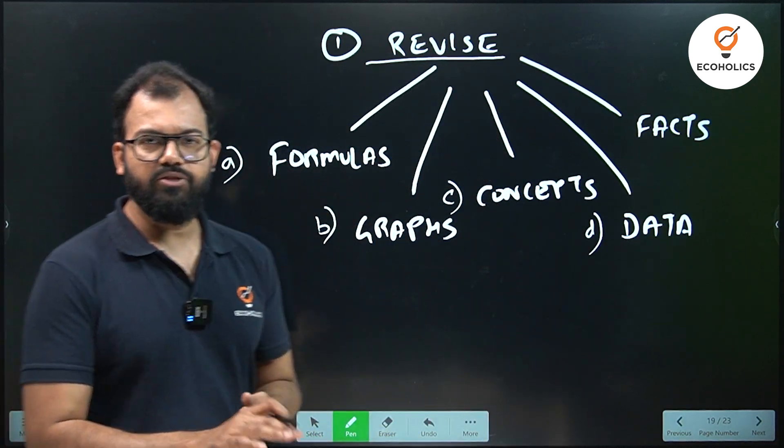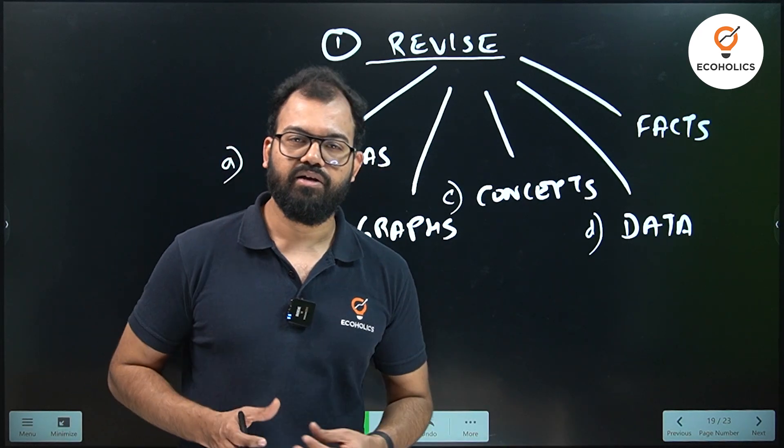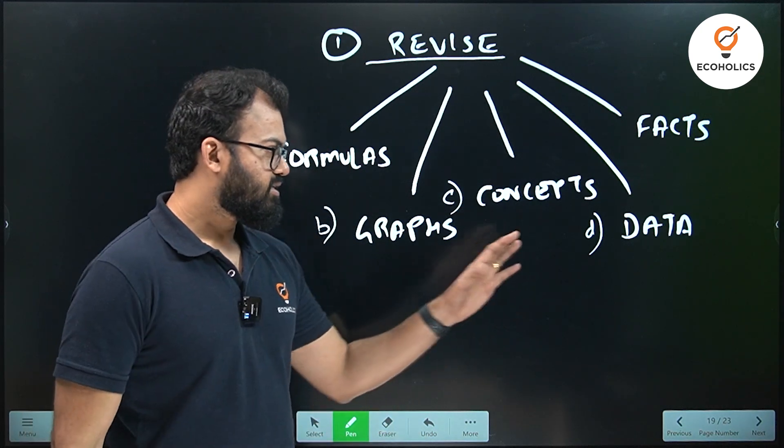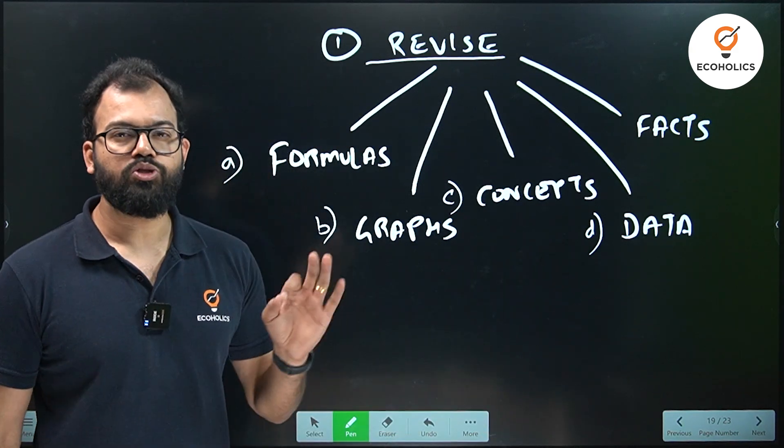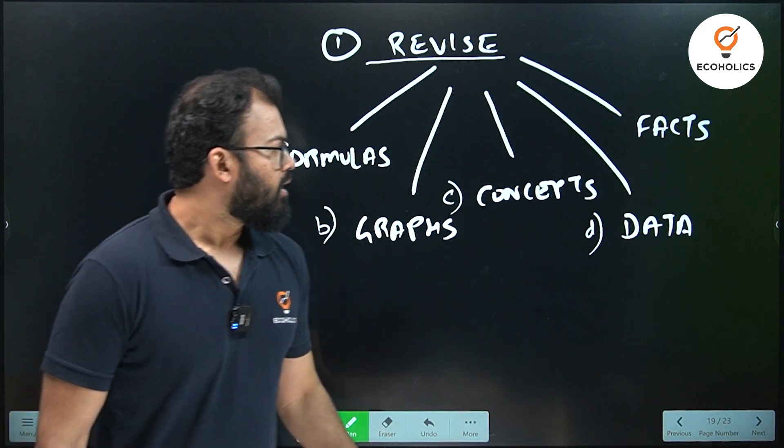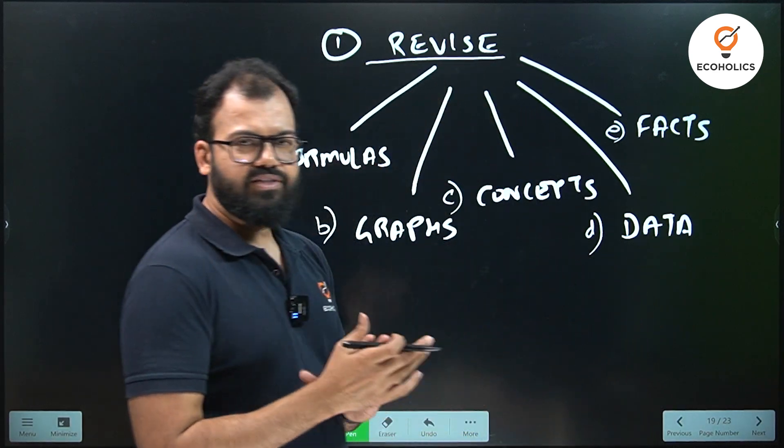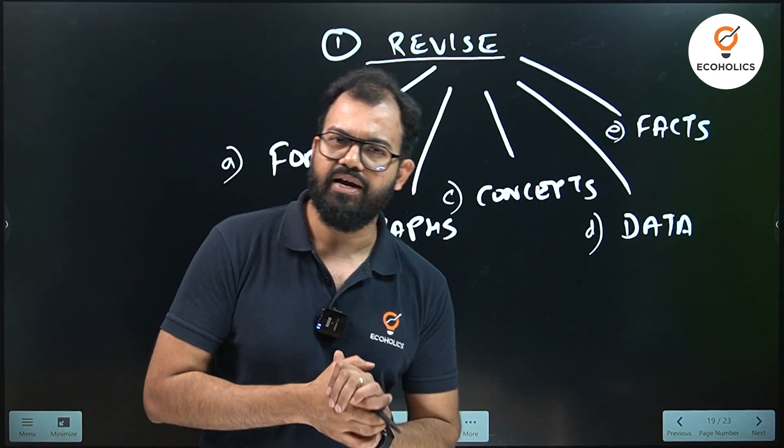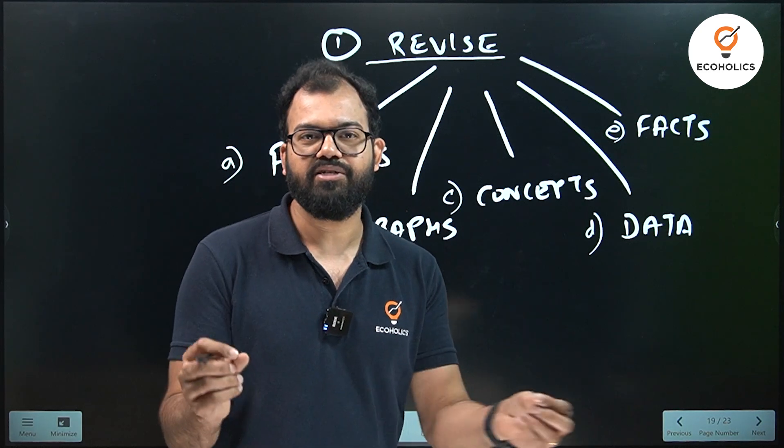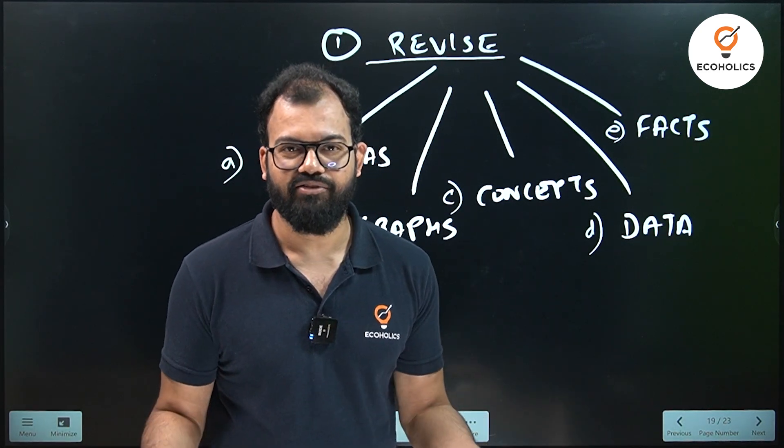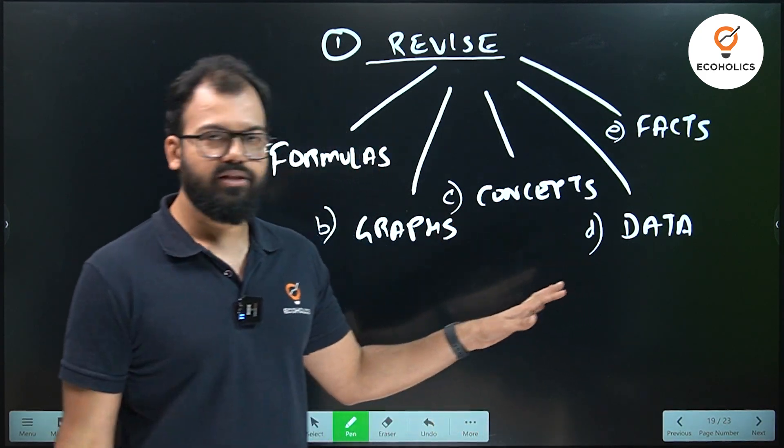Generally in UGC NET, we have seen questions directly asking the data - this much inflation, this is the debt to GDP ratio. So they ask data. I would recommend you to refer to economic survey for this - this is where you'll get the most authentic data. For our students, we compile and give them 50 odd data which are very vital like fiscal deficit, inflation, repo rate, CRR. If you understand approximations, you're able to answer these questions. Like if I say repo rate is 15%, you will laugh - repo rate is nowhere near 15%. So you need to understand approximation.